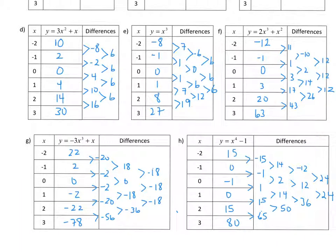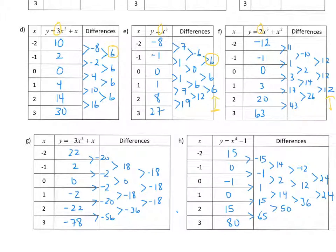Going back to our values: a second difference that is constant means it's quadratic — degree two. I had a positive six value and my leading coefficient was three. For part E, the first cubic, it was the third differences that are constant, with value six and leading coefficient one. For part F, also cubic, the third differences are constant and the leading coefficient is two, giving a constant difference of twelve. So a leading coefficient of one gives six; a leading coefficient of two gives twelve — so cubic functions always have a multiple of six as their constant difference.